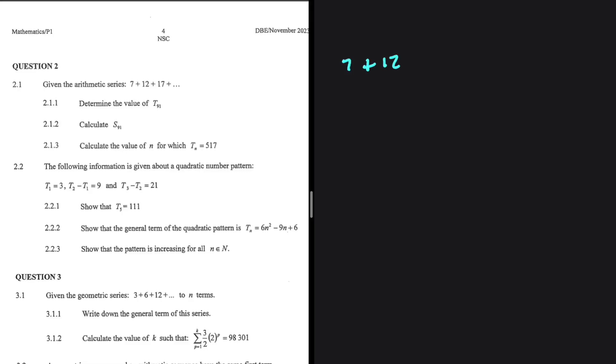7 plus 12 plus 71. Those are the three first terms of our arithmetic series. The first question, 2.1.1, we want to determine the value of T91.